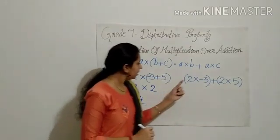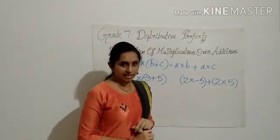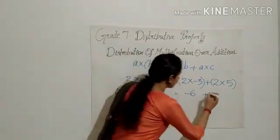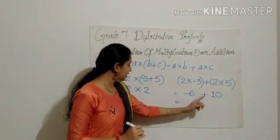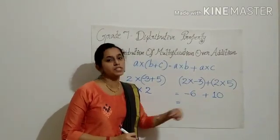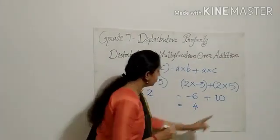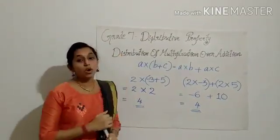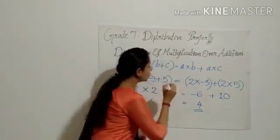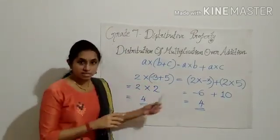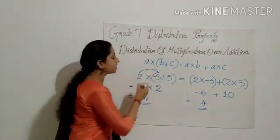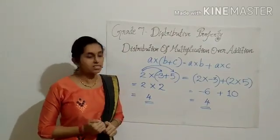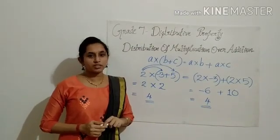Let us check the RHS also. 2 into negative 3 — what is 2 into negative 3? It is negative 6. Negative 6 plus 2 into 5. What is 2 into 5? It is 10. So at last, negative 6 plus 10. Again there are different signs, we subtract and put bigger number sign: 10 minus 6 is 4, bigger number sign is positive. So here we got 4. The RHS answer is also 4, LHS is also 4 — they are equal. So we can conclude: 2 into negative 3 plus 5 equals 2 into negative 3 plus 2 into 5. That is distributive property. Multiplication distributes over addition.